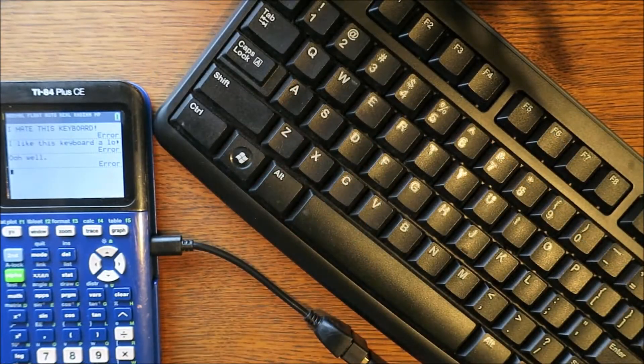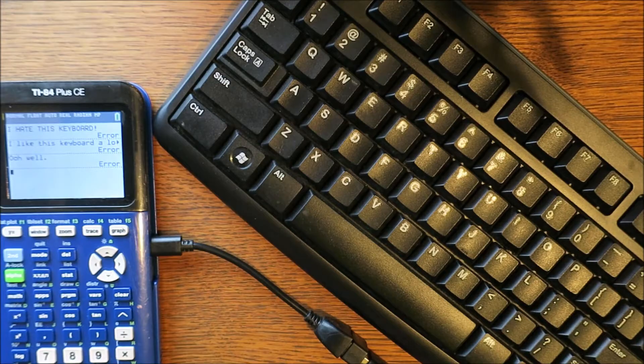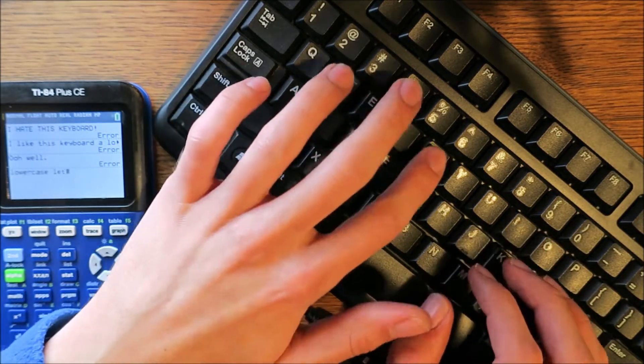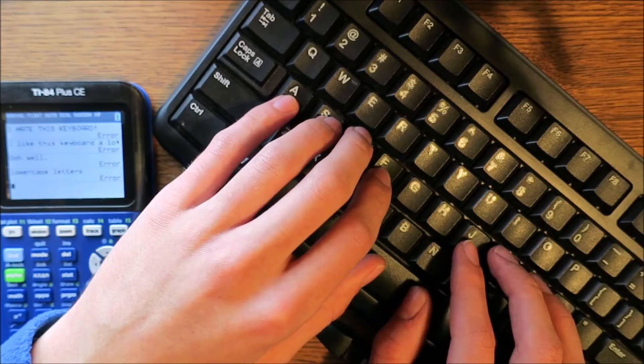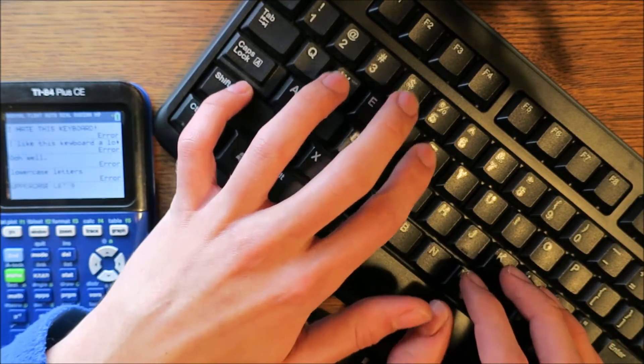If you start to immediately type, you'll notice that the calculator will display lowercase letters and numbers. If you press and hold shift, it will display uppercase letters and the characters above the numbers. That's all expected behavior.